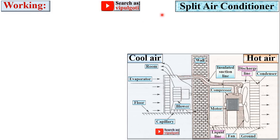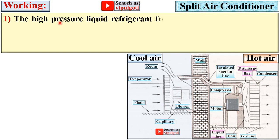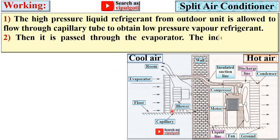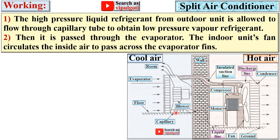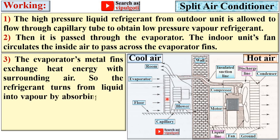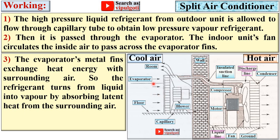Regarding the working of the split air conditioner: the high pressure liquid refrigerant from the outdoor unit is allowed to flow through the capillary tube to obtain low pressure refrigerant. It is then passed through the evaporator. The indoor unit's blower circulates the inside air to pass across this evaporator. The evaporator's metal fins exchange heat energy with the surrounding air so that the refrigerant turns from liquid into vapor by absorbing latent heat from the surrounding air.